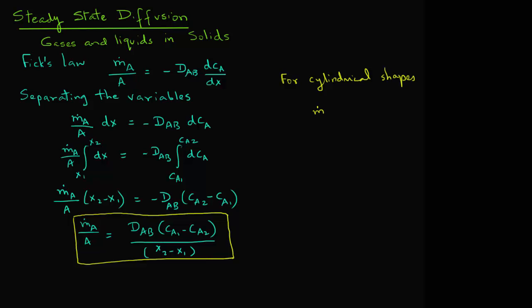The expression you will get is m_A equals D_AB times 2πL, where L is the length of the cylinder, times (C_A1 minus C_A2) divided by ln(R2/R1), where R1 and R2 are the inside and outside radii of the cylinder.